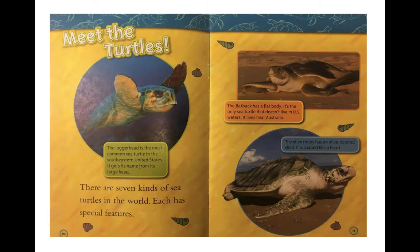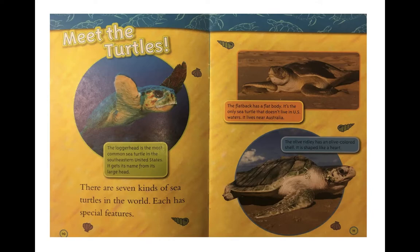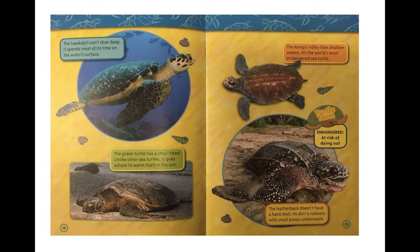Meet the turtles! There are seven kinds of sea turtles in the world — each has special features. The loggerhead is the most common sea turtle in the southeastern United States; it gets its name from its large head. The flatback has a flat body and is the only sea turtle that doesn't live in U.S. waters — it lives near Australia. The olive ridley has an olive-colored, heart-shaped shell. The hawksbill can't dive deep and spends most of its time on the water surface. The green turtle has a small head and unlike other sea turtles, goes ashore to warm itself in the sun. The Kemp's ridley likes shallow waters and is the world's most endangered sea turtle.